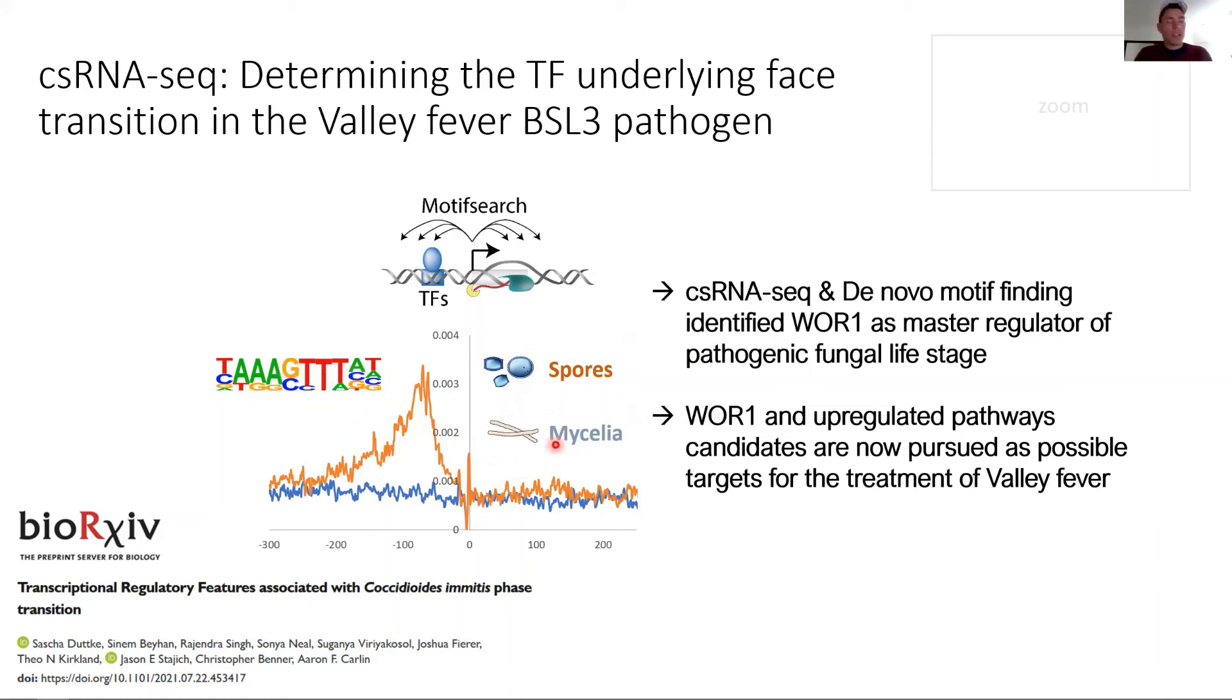Lo and behold, another group we worked with, when they knocked out Wor1, showed that if this is depleted you can no longer transition from mycelia to these pathogenic spores. That's one of these cool examples where you can work with a BSL3 pathogen or with BSL4 because this RNA is BSL2 plus. But also how basically CSRNAseq could tell us the underlying biology of phase transition or change from this developmental stage into this one. This is important because this one is pathogenic but this one is all cool with us.